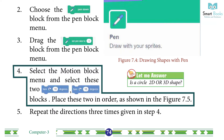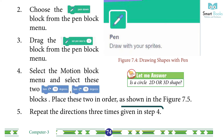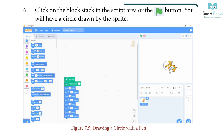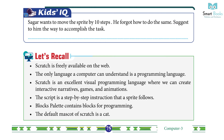Step 4 — select the motion block menu and select the required two blocks; place these two blocks in order as shown in the picture. Note: a circle is a 2D shape. Step 5 — repeat the direction three times as given in step 4. Step 6 — click on the block stack in the script area, and you will have a circle drawn by the sprite.